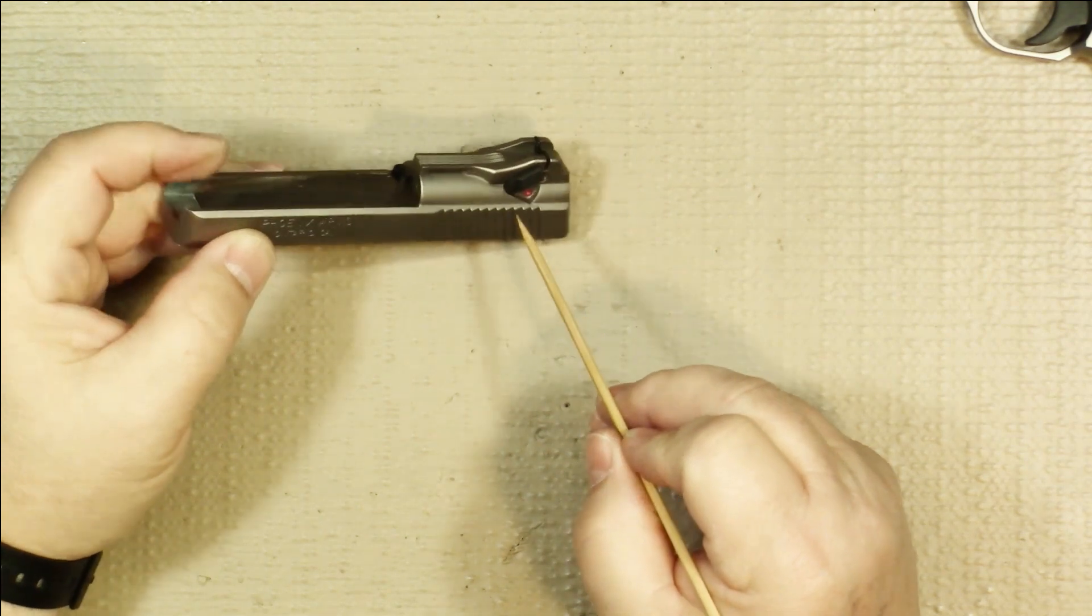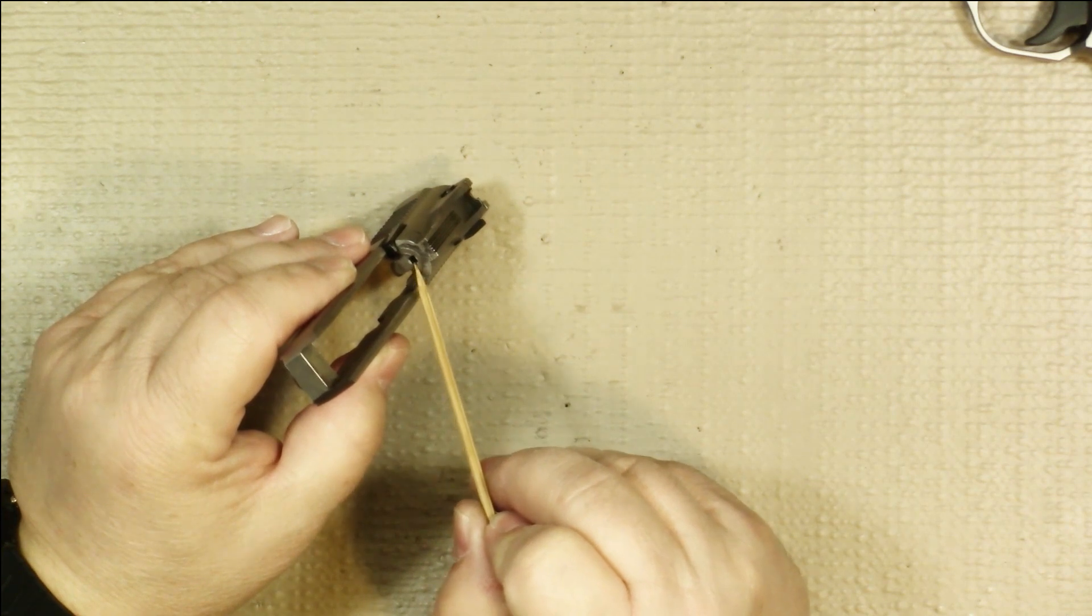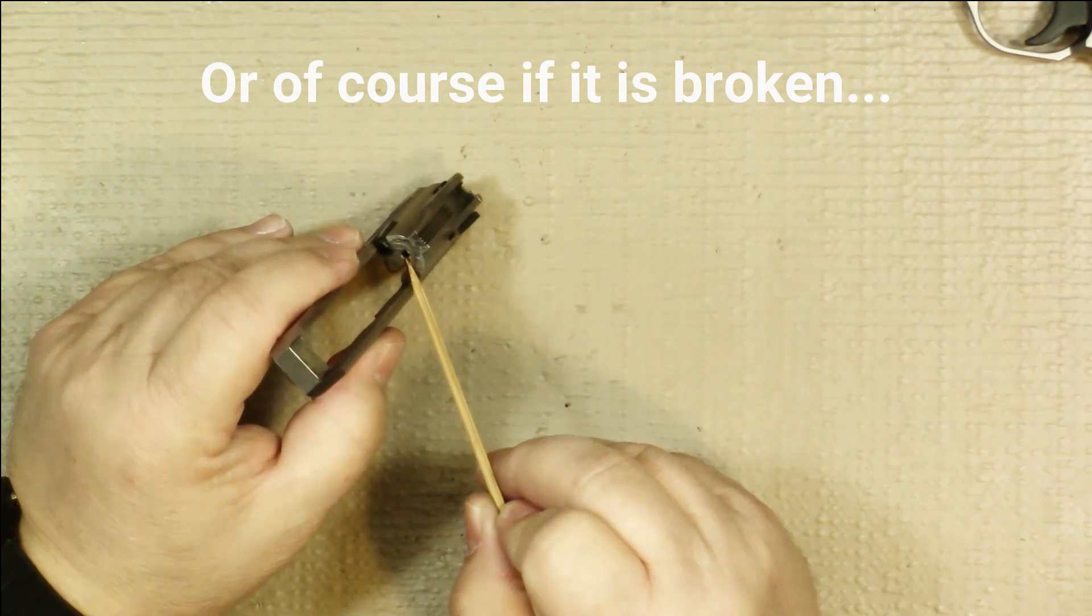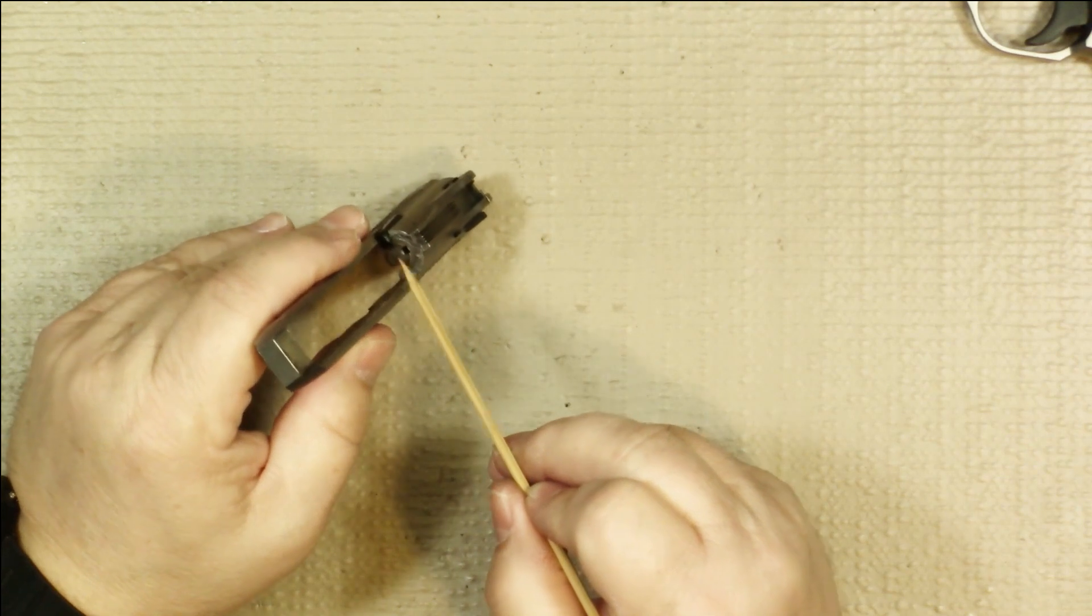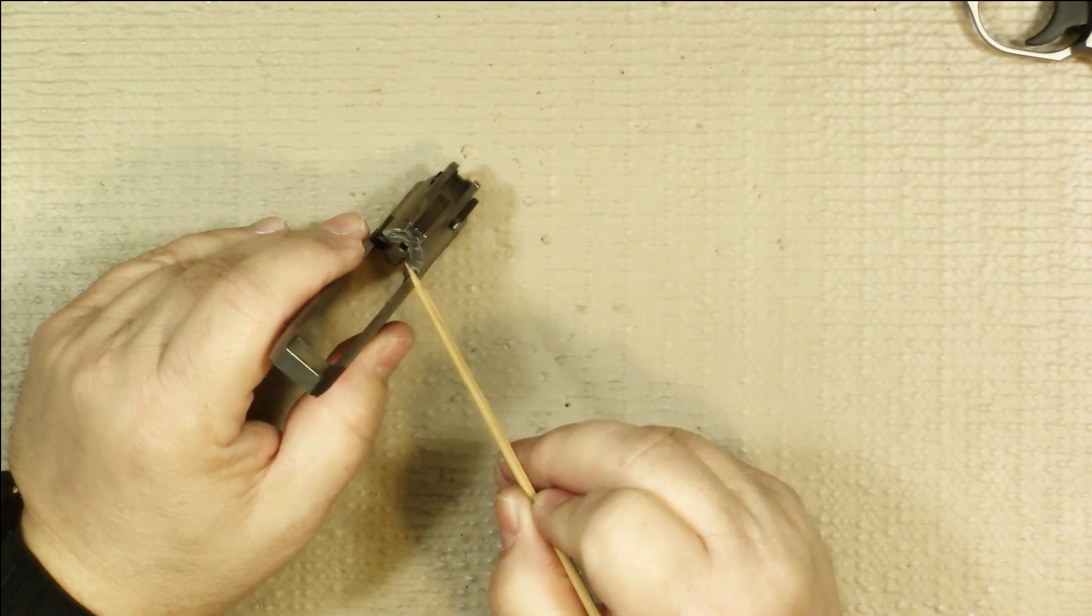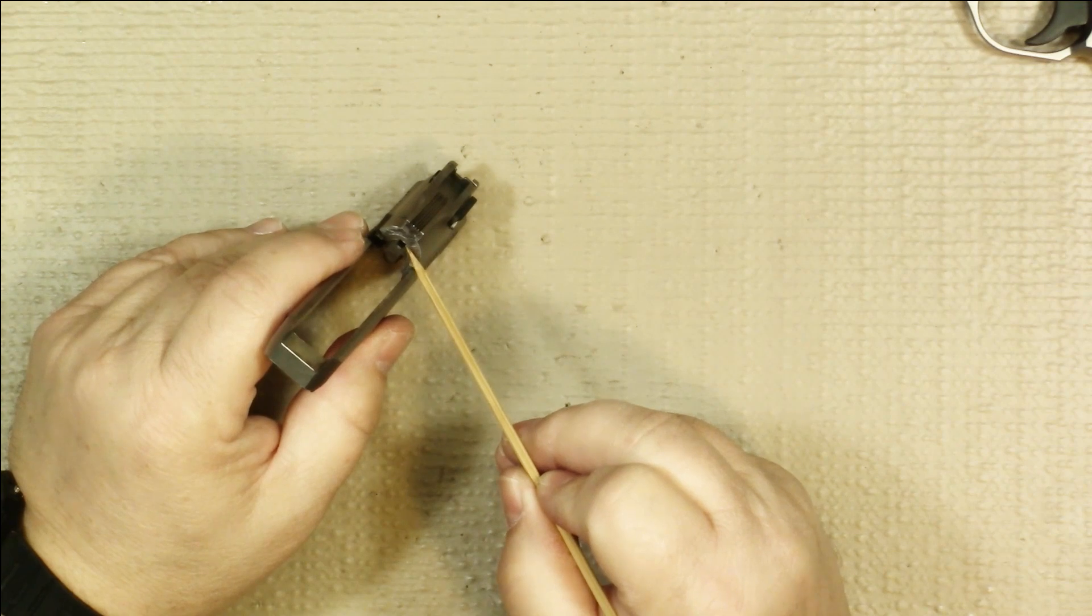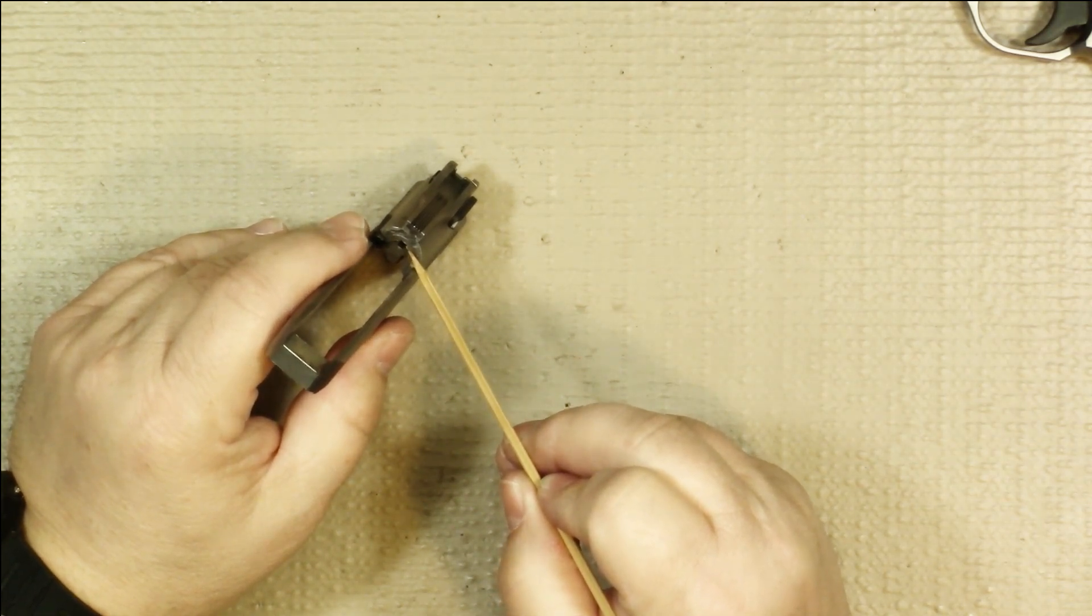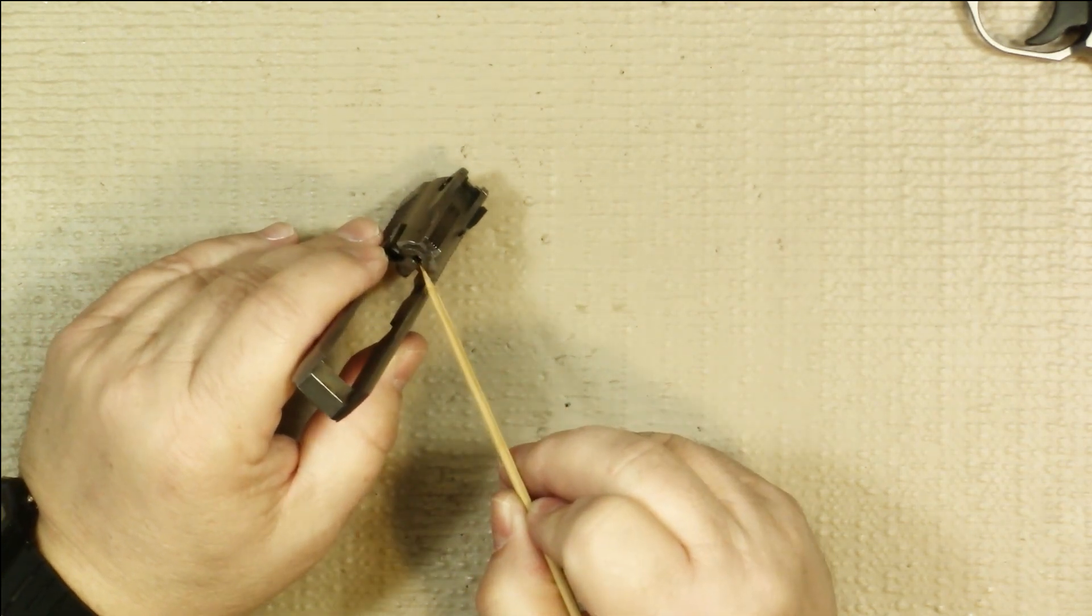Now the reason why you would need to remove the firing pin would be mostly if it just gets so much gunk into the firing pin channel there that it no longer is igniting the cartridges properly. 22 rimfire ammunition is notoriously dirty and so a lot of crud and gunk will eventually get in there and you'll need to clean it out. Now this is not routine field stripping and routine cleaning, this is something you really only need to do if you're starting to notice issues where the firing pin is not igniting the cartridge or if you can look in there and you can tell it's really gunky.